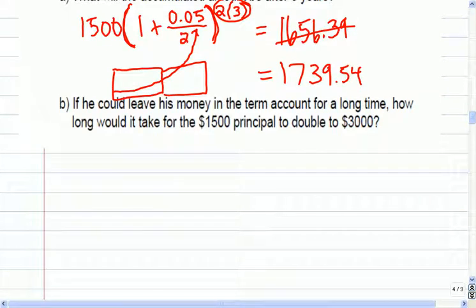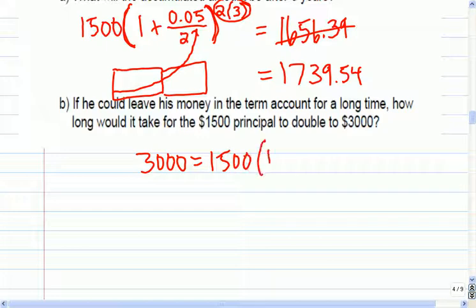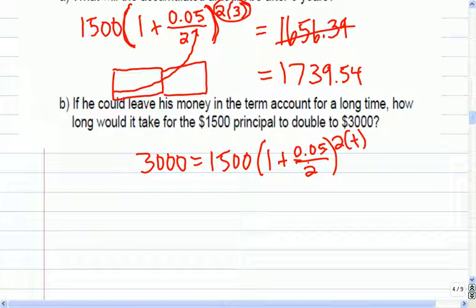This time around what we're looking for is we want it to go to 3,000 from 1,500 and 1 plus 0.05 over 2. And it's the time that I don't know, so I'll leave time as my unknown. This is the equation I'm trying to solve. You're going to need a log to do this.